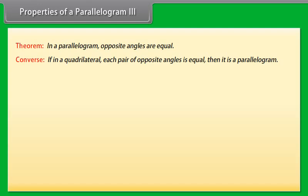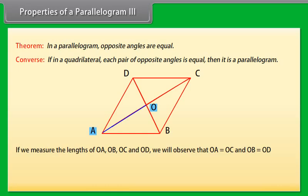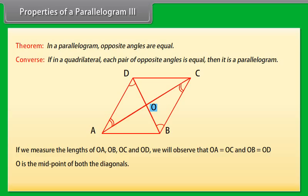Properties of a parallelogram - Property 4: Draw a parallelogram ABCD and draw both its diagonals intersecting at point O. If we measure OA, OB, OC, and OD, we observe that OA equals OC and OB equals OD, meaning O is the midpoint of both diagonals. Repeating this with more parallelograms confirms that O is always the midpoint of both diagonals. This gives us the theorem: the diagonals of a parallelogram bisect each other.